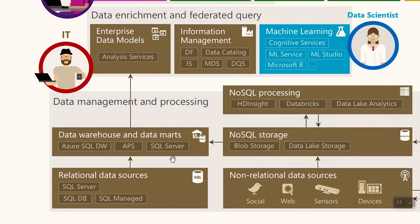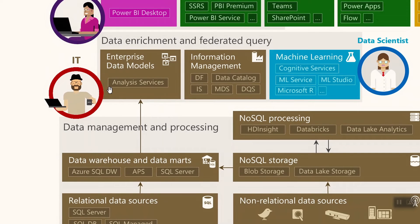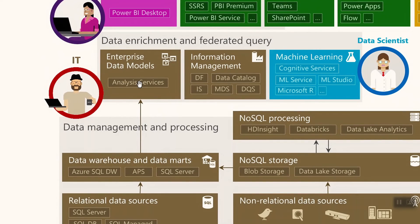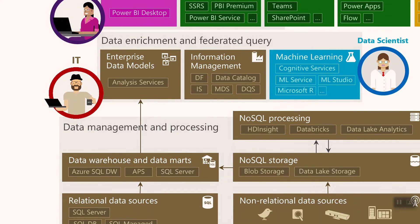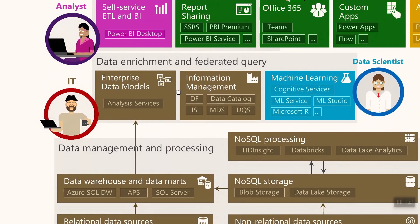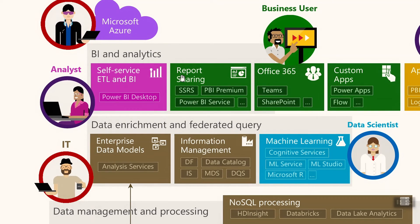On top of the Data Warehouse, which contains all of the data, you can build enterprise data models using Analysis Services in Azure or SQL Server Analysis Services for on-premises solutions. Here you can create tabular models and load the most important information. Analysis Services is optimized for analytical queries and uses the VertiPaq engine to store data in a columnar format — already compressed and optimized for processing. On top of this, you can create reports using Power BI Service.